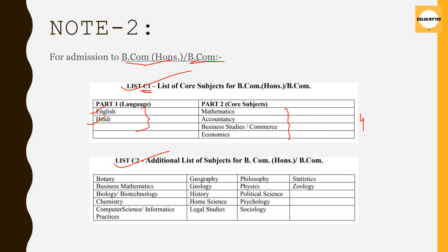If you don't have a Commerce background and come from Science or Arts, then in that case you have to choose one language — either English or Hindi — and any other three subjects from List C2. You choose one language and three subjects from C2 and calculate your best 4.